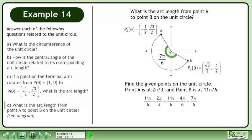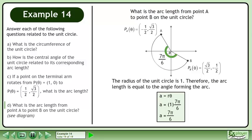We can find the central angle by subtracting 2π over 3 from 11π over 6. This gives a central angle of 7π over 6. The radius of the unit circle is 1. Therefore, the arc length is equal to the angle forming the arc, which is 7π over 6.